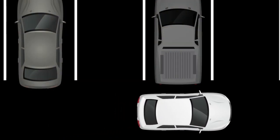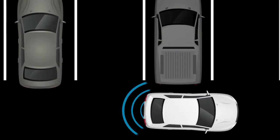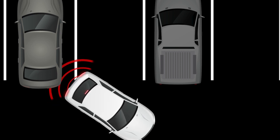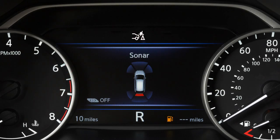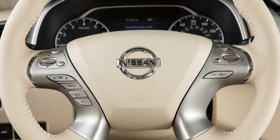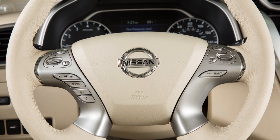If a risk of a collision with an obstacle is detected when your vehicle is backing up, the RAB system warning indicator will flash in the vehicle information display. A red frame will appear in the center display, if so equipped, and the system will chime three times.